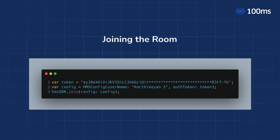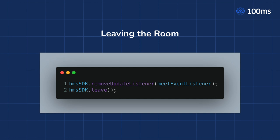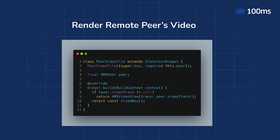Joining the room: you would need an auth token. You can get this by generating it from your own token service endpoint in the backend — I'll show you how I did it in a few minutes. Next, create an object of HMSConfig by passing in the username and the authentication token, then call HMSSDK.Join with that config. Leaving the room: before leaving, remove the listener by passing the listener into HMSSDK.RemoveUpdateListener, then call HMSSDK.Leave. To render the remote peer's video, use the special HMSVideoView widget from the SDK, passing in the video track via the VideoTrack property on the HMSPeer object.